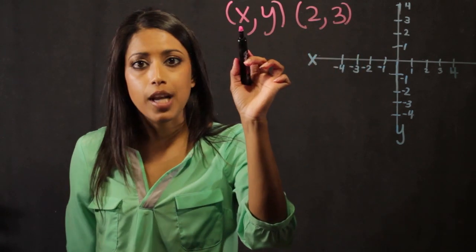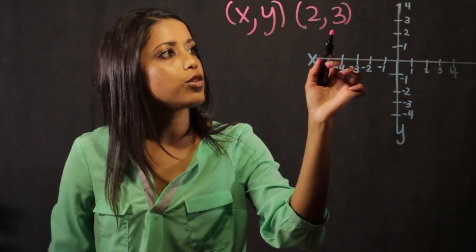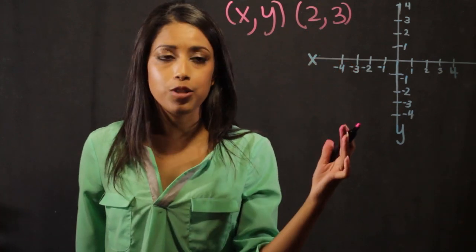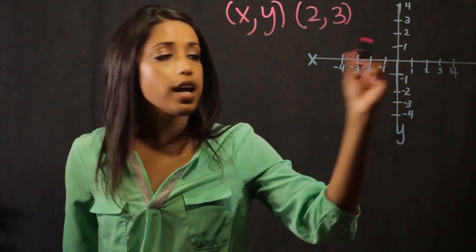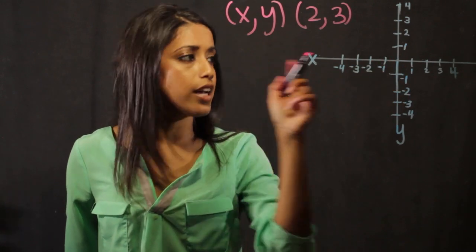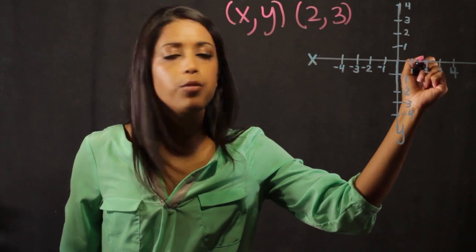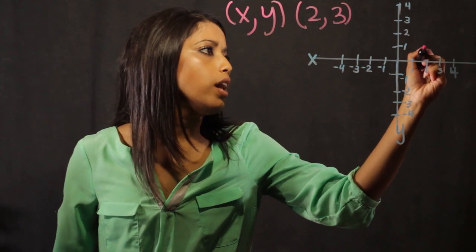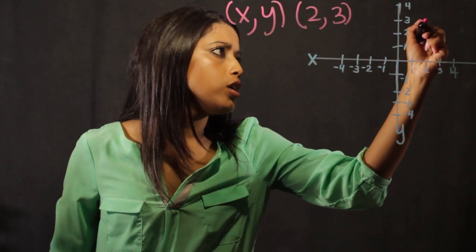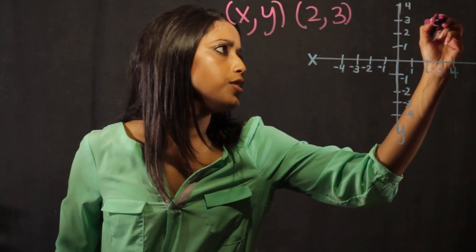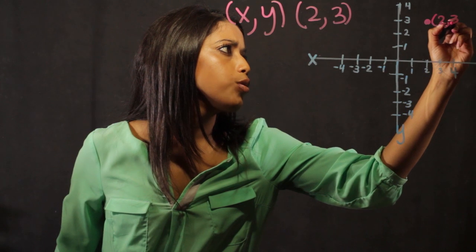Two is going to be the number that we use on the x-axis, and three will be the number that we use on the y-axis. When we go to graph this ordered pair, we go on the x-axis, which is this line right here, and we count two. One, two, and then on the y, we're going to count up three. One, two, three. So this point right here is the ordered pair two comma three.